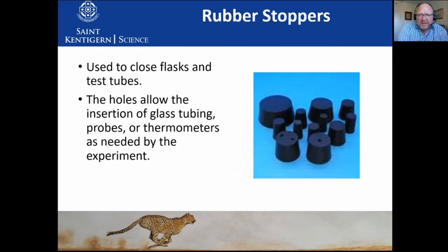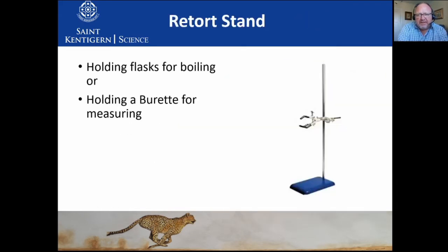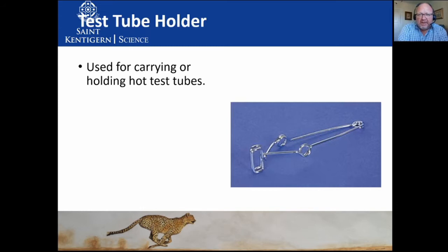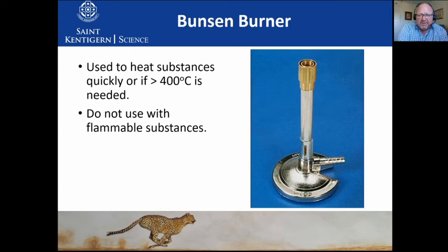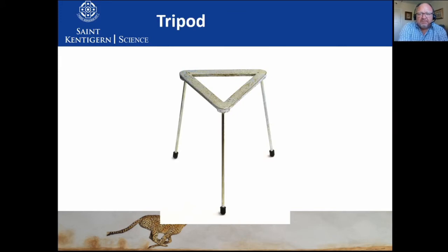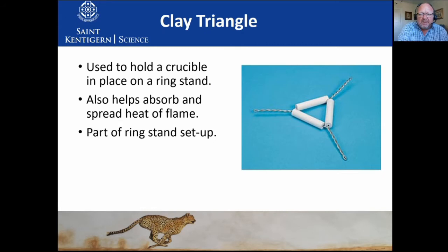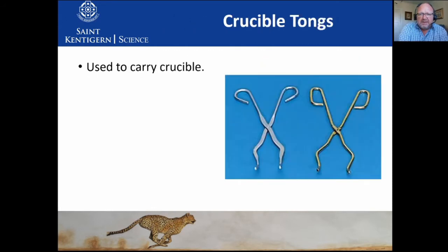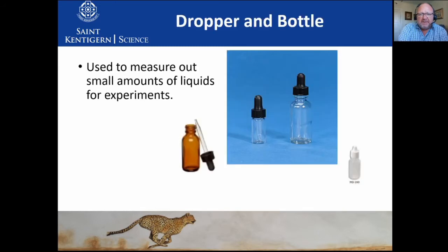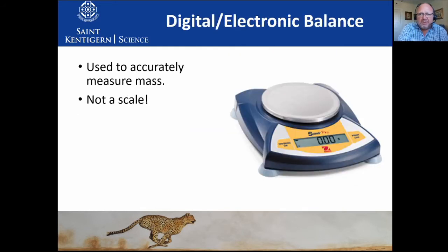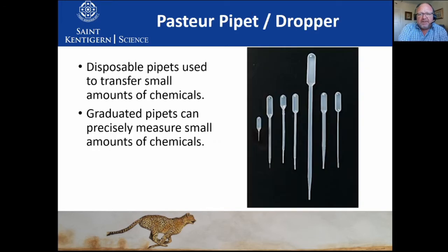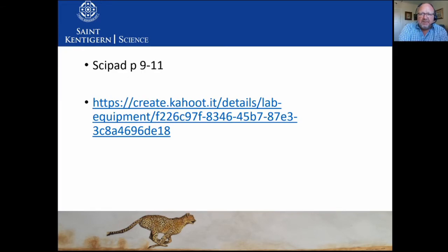Then we have reagent bottle, rubber stoppers, test tube racks and test tubes, the retort stand, test tube brushes, test tube holder, thermometer, Bunsen burner, rubber tubing, wire mesh, tripod, clay triangle, crucible and cover, crucible tongs, mortar and pestle, stirring rod, spotting tile, evaporating dish, meter ruler, funnel, droppers, goggles and apron, digital balance, triple beam balance, pipette pump and bulb, the stair pipette, and dropper. Then I asked you to play a Kahoot.